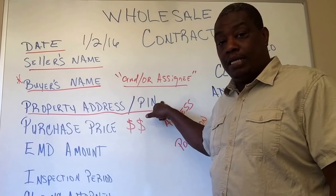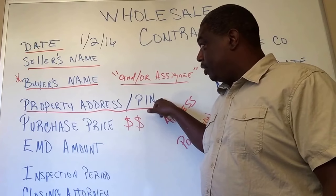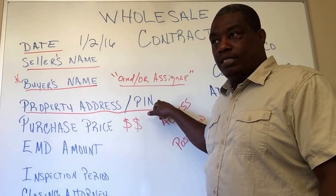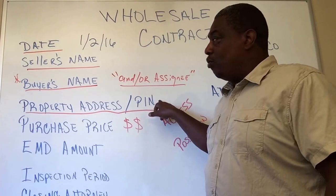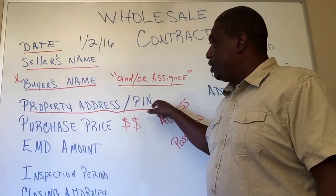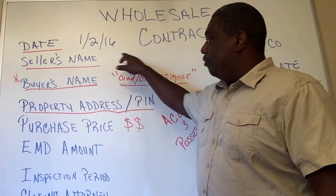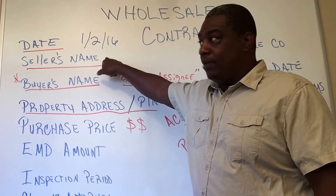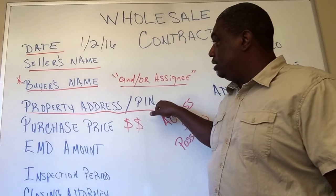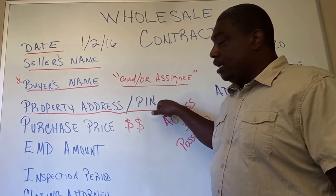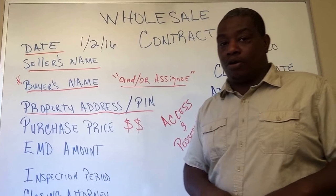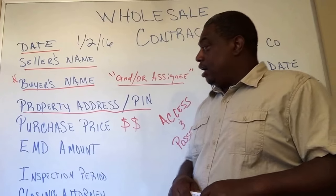Where can you find this property identification number? When you go to the county assessor's website and search for that property, the PIN will be right there alongside the seller's name. Make sure you have this property identification number on the contract.